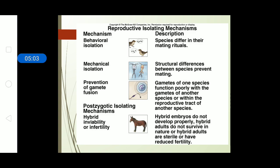The next is poor zygotic isolation. Even if the previous barriers are overcome — for example, if you hybridize a horse and a zebra — they can form a new offspring, but that offspring will not be able to survive because it will be infertile or unable to cope with environmental stress. These four are the main categories of reproductive isolation mechanisms.